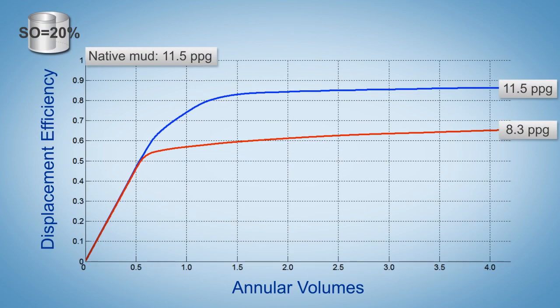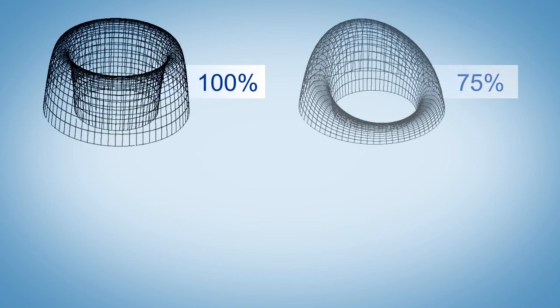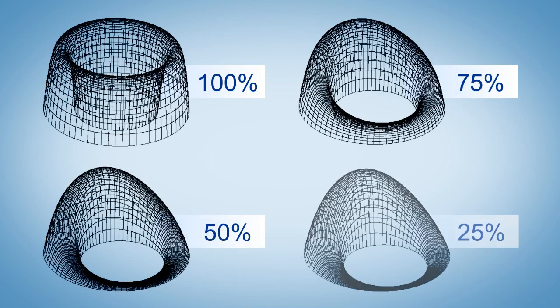Using a low density fluid to displace a heavier fluid gives a 60% efficiency while replacing it with a heavier fluid increases the efficiency to 95%. If we decrease the standoff, the velocity profile will shift toward the wide side.